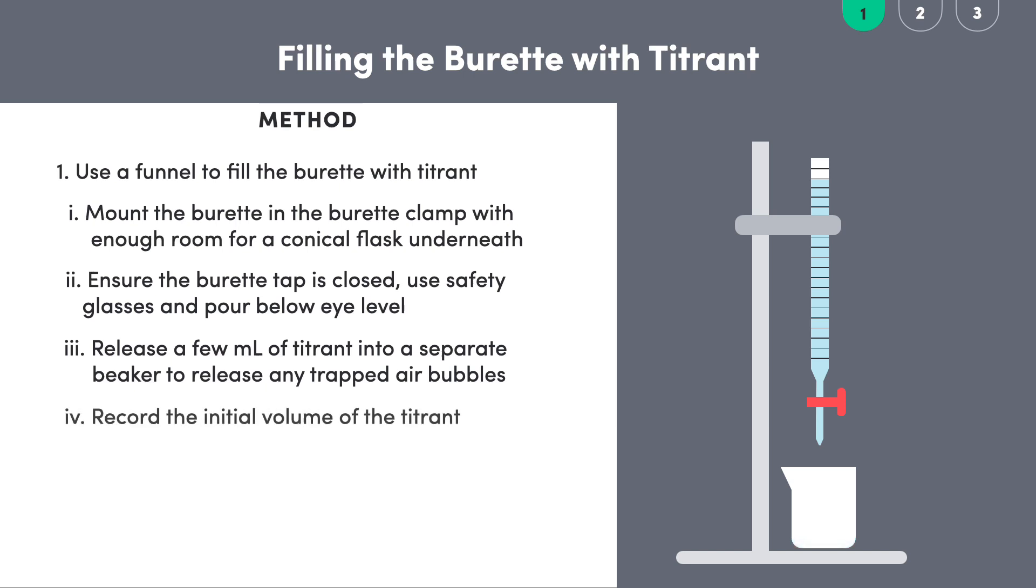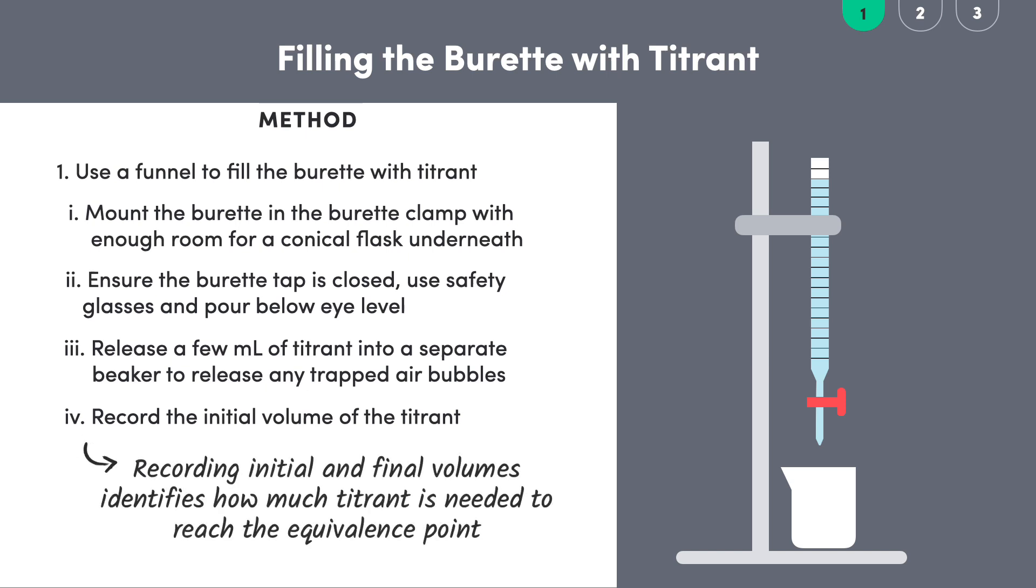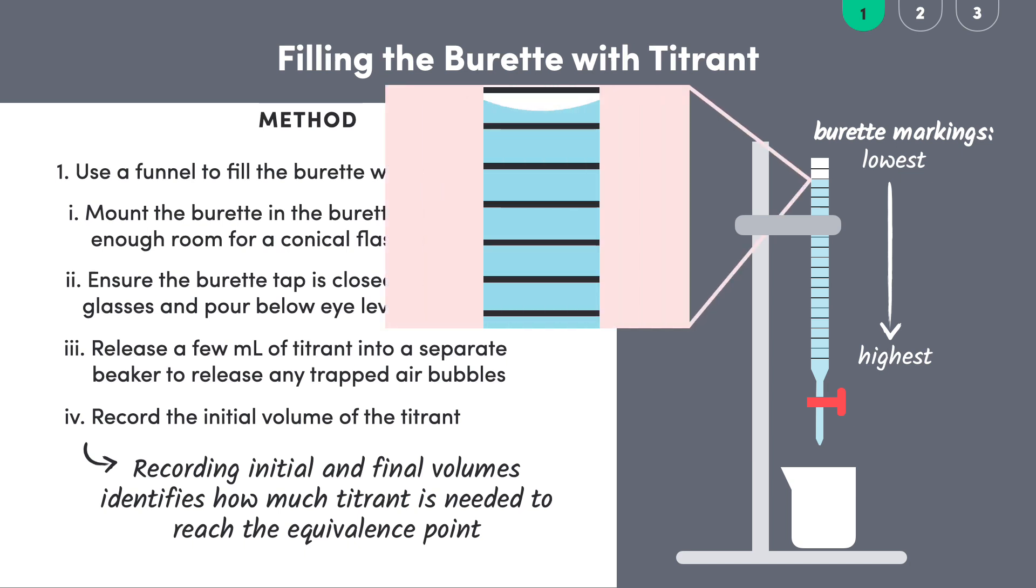At this point make sure to record the initial volume of sodium hydroxide in the burette. We need to know the initial and final volumes of titrant after each run of the titration so that we can precisely identify how much was needed to reach the equivalence point. Take note that the markings on the burette go from lowest at the top to highest at the bottom. Also be sure to read the value that corresponds with the bottom of the meniscus and from eye level to avoid parallax error. So here we'd mark down the initial volume as 2.35 milliliters.